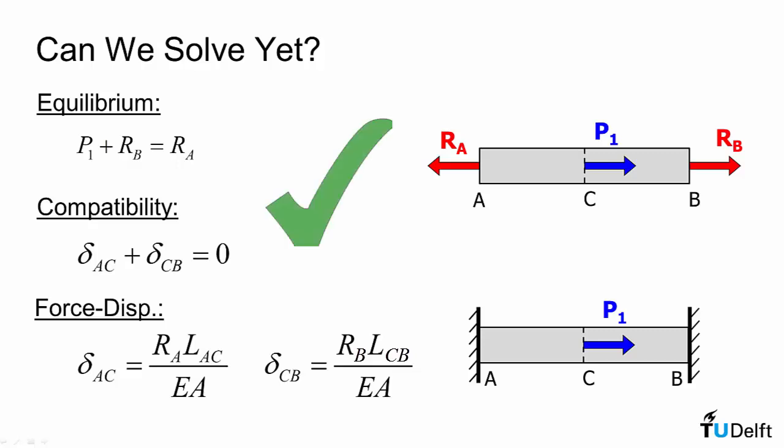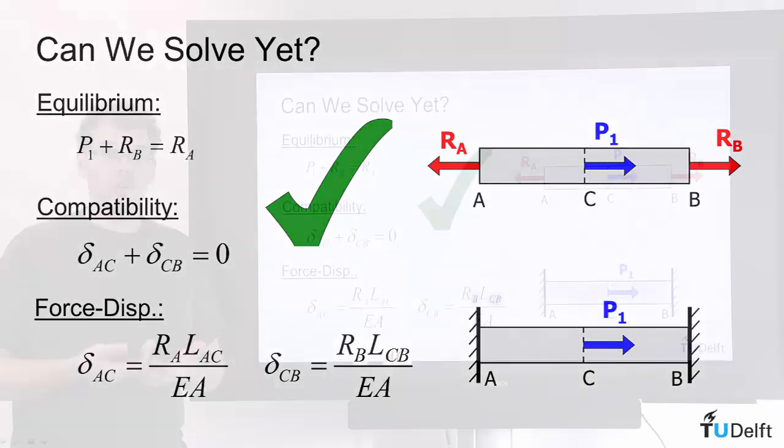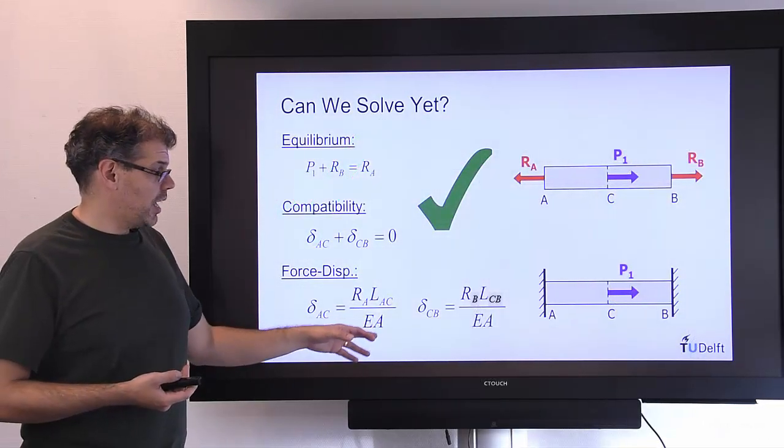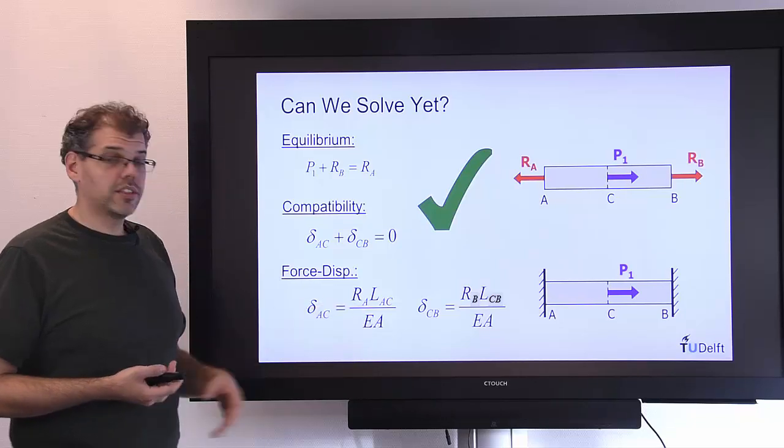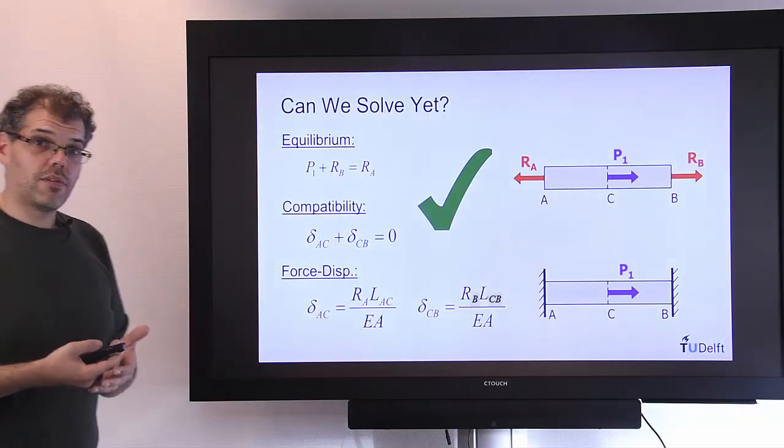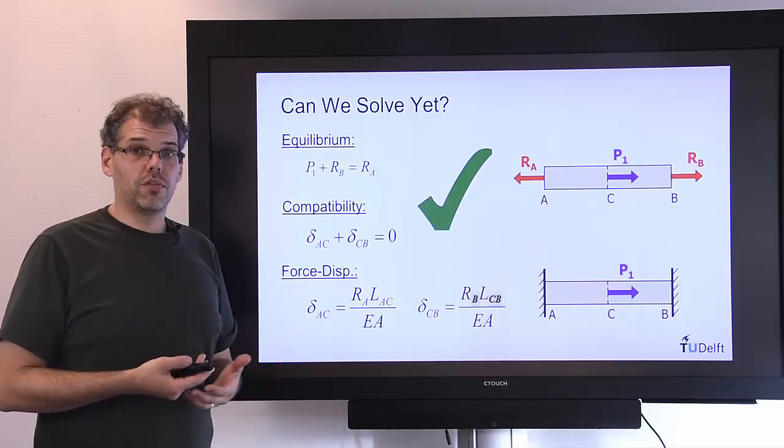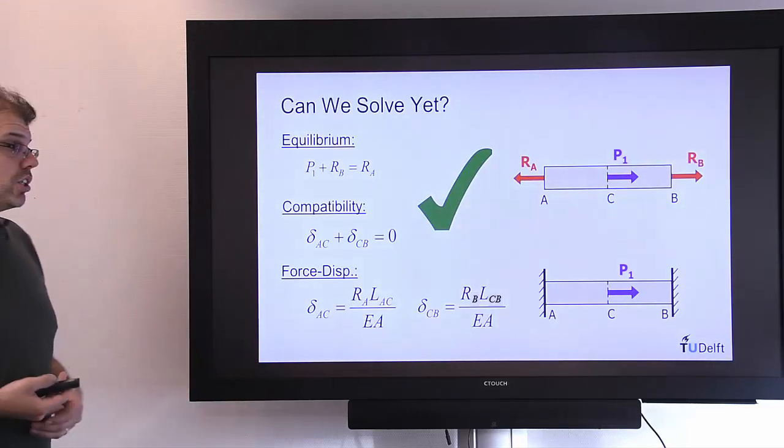So we get four unknowns, four equations we can solve for the unknown reaction forces and that's effectively what we need to do in a statically indeterminate problem. Look at how the stiffness and the geometry, the area, lengths influence the deformation and that will determine what the unknown reaction forces are, those redundant reaction forces.